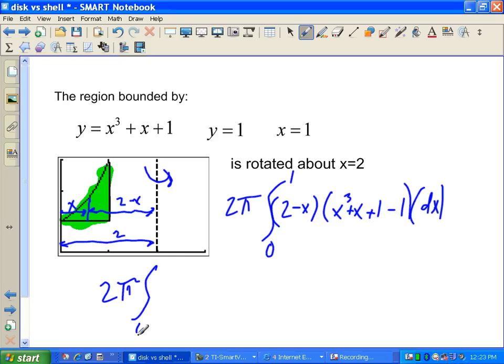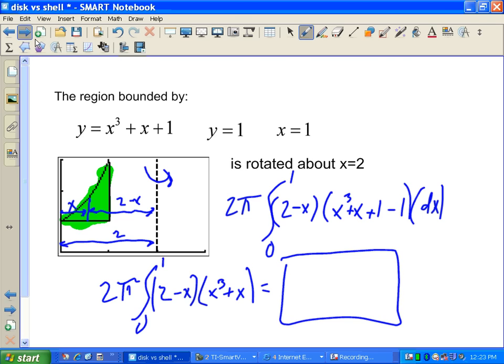Let's see what that looks like if we make it a little nicer looking. Two pi integral from zero to one. Two minus X times X cubed plus X. We need to expand that out if we're going to try to do this by hand, but honestly, at this point, we've got the setup. We can jump right to the calculator and come up with an answer, and I will leave that for you to do.